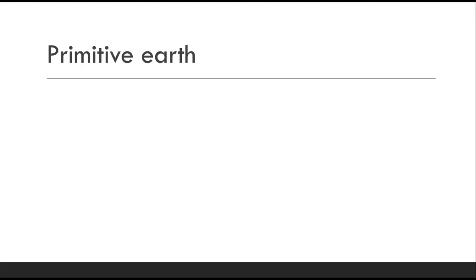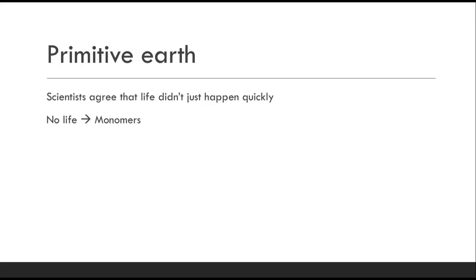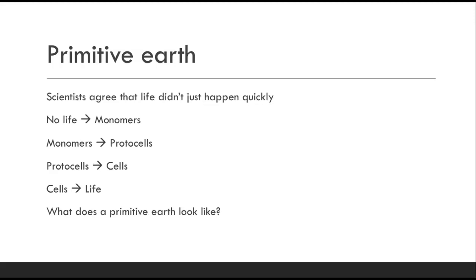That's the geologic evidence. Let's talk about chemical evidence and that primitive Earth again. Life didn't just happen right away. You have to go from having no life, to then suddenly making chemical monomers — things like amino acids, not proteins, but amino acids that eventually became proteins, and small monosaccharides. Those monomers have to join together to make polymers, then eventually protocells — the first types of basic cells — and then those protocells have to eventually become cells, and then those cells have to become life.